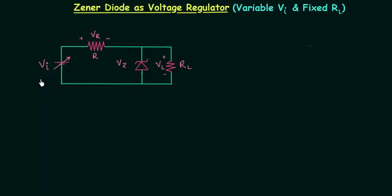Input voltage Vi is variable and load resistance RL is fixed in this circuit, and we have to find out the condition for minimum input voltage and condition for maximum input voltage.